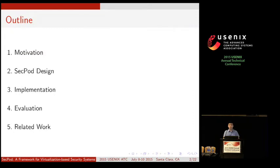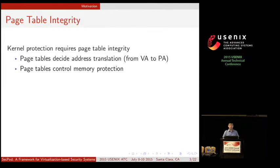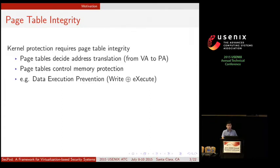Let's start with the motivation of this work. The kernel page table integrity is very important because the page table will decide the address translation, like from the virtual address to the physical address. The page table also controls the memory protection. For example, the lower several bits in our page table entry will decide whether a page frame is readable, writable, or executable. One case of using the page table for protection is data execution prevention, or DEP.